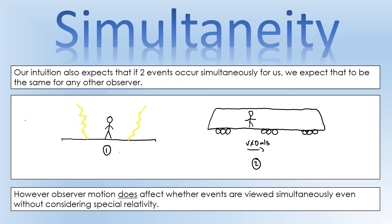The observer on the train, however, is going to see the one on the right first, because the light only has to travel a short distance, whereas the one on the left has to travel a longer distance so it will take longer to get there. So they'd see the one on the right first and then the one on the left. So even without special relativity, simultaneity is not really an intrinsic property — depending on what you are doing as an observer, you can see things as simultaneous or not simultaneous.